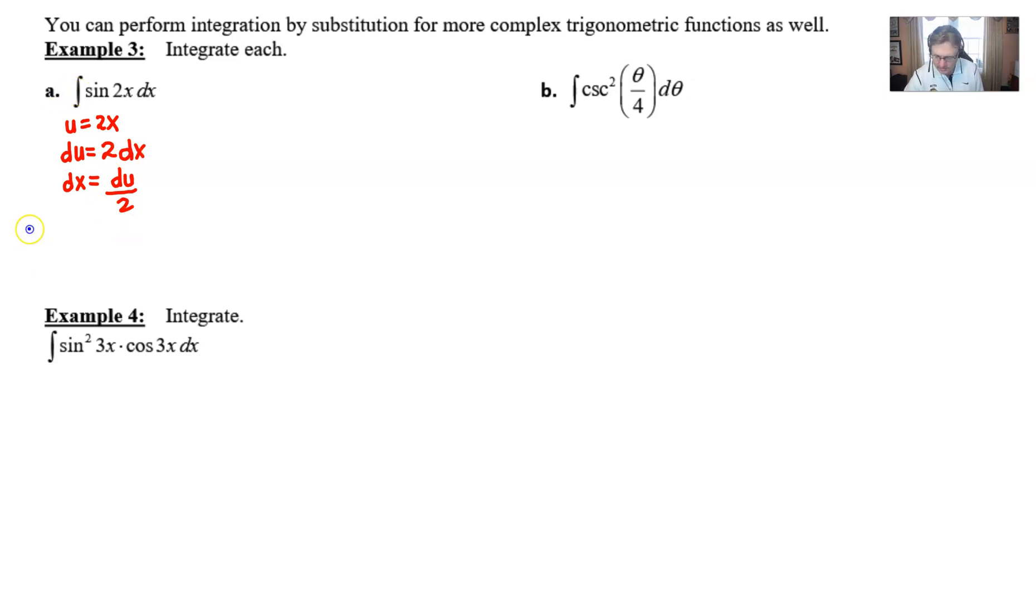You see that dx is du divided by 2, at which point this integration can be rewritten as the sine of u, where the 2x is replaced, and then this dx becomes du over 2, which basically means you're just going to pull a one-half out to the very front of the integration.